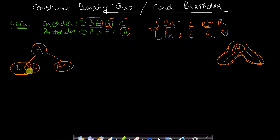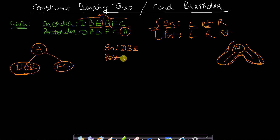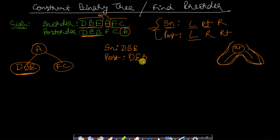For the three elements to the left, you will call a recursive function. The entire code will be present in the description below. D, B, E is to the left of A, so it will be the left subtree. In the recursive call, you pass in-order as D, B, E and post-order as the first three elements — D, E, B — because the number of elements must be equal in both, and the leftmost elements belong to the left subtree.